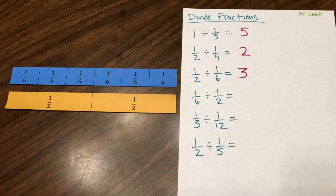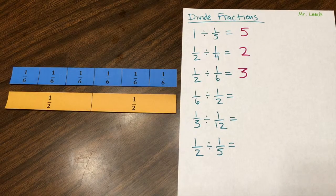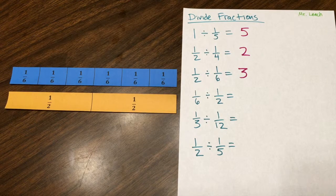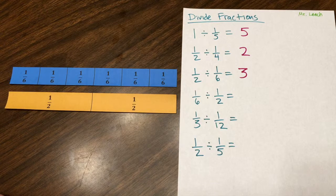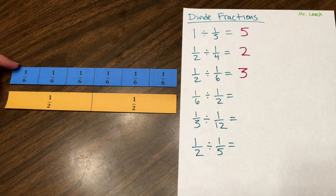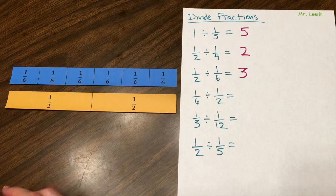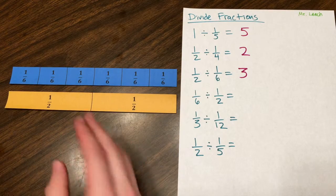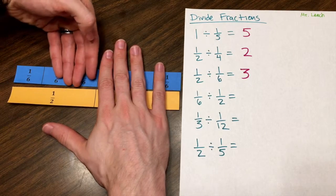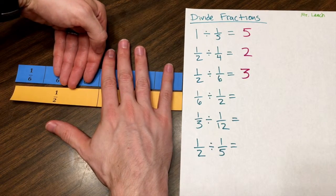Now we learned in the last video that multiplication is commutative, which means I can just switch them around. Well can I do that with division? Is division commutative? How many one-halves can I fit into one-sixth? Well none really. I can't fit a whole one-half into one-sixth. It doesn't work.